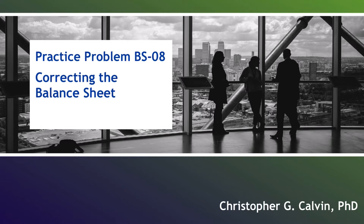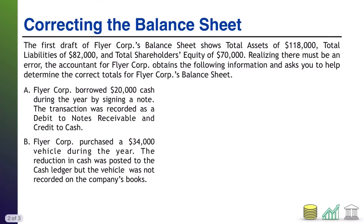Hi, everyone. Welcome to practice problem BS08, Correcting the Balance Sheet. In this practice problem, I'm giving you a little bit of information about the basic accounting equation for FlyerCore's balance sheet, letting you know that total assets are $118,000, total liabilities are $82,000, and total shareholders' equity is $70,000.